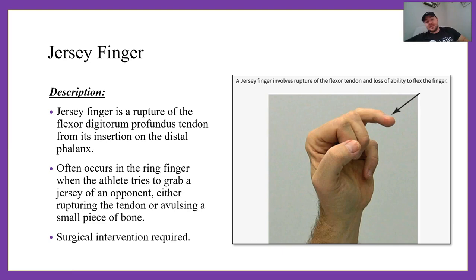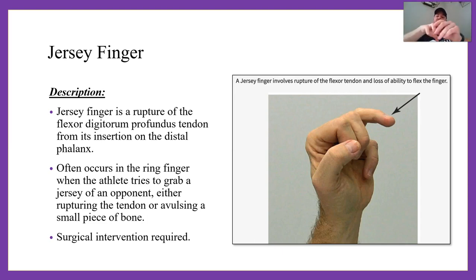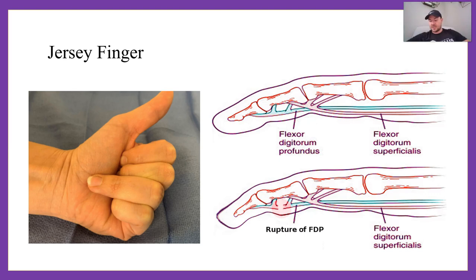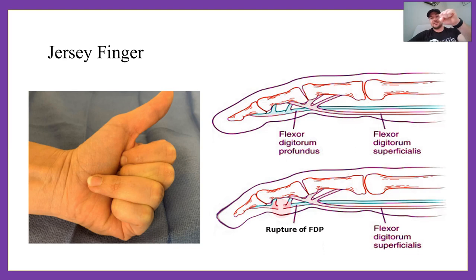Jersey finger is just the opposite — it's a rupture of the flexor digitorum profundus tendon from its insertion on the distal phalanx, so it's the palmar side injury. It often occurs in the ring finger, usually because someone's trying to grab someone's jersey and it gets pulled into extension forcefully, causing disruption of the FDP tendon. For the special test, you simply ask the individual to flex all phalangeal joints — if one stays open and doesn't flex, that tendon is likely ruptured.